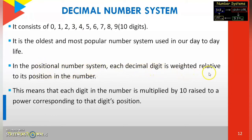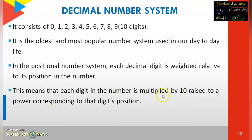In the positional number system, each decimal digit is weighted relative to its position in the number. In mathematics you know the 0th position, 10th position, 100th position — like that. Decimal numbers also have a positional number system. This means each digit in the number is multiplied by 10 raised to a power: 10 power 0, 10 power 1, 10 power 2, and so on. We calculate the digit's position using 10 to the power. Now you can see an example.